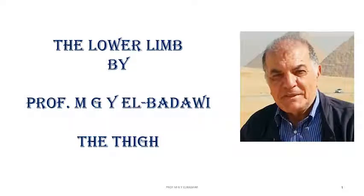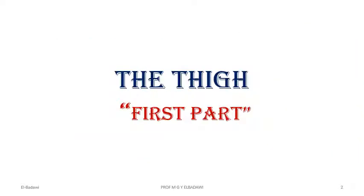In this part of the lower limb, we are going to describe the thigh. This will be the first part of the thigh, where we are going to describe the layers of the thigh, the front of the thigh, the femoral triangle, and the femoral sheath.